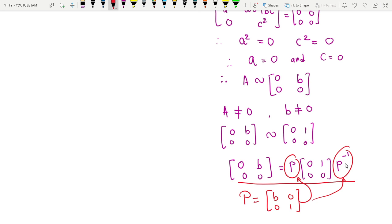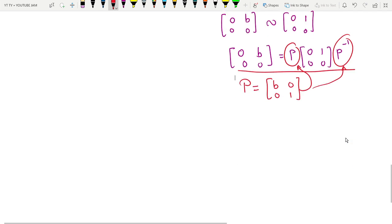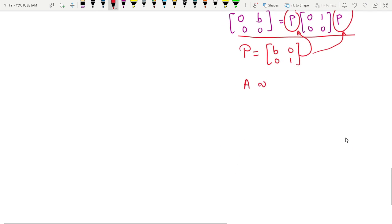Just try to substitute this P and find out the P inverse and substitute it. Just check whether it is true. If it is true, that means [0 b; 0 0] is similar to [0 1; 0 0]. Hence, ultimately, what we get is matrix A becomes similar to [0 1; 0 0]. If you understood the proof, let me know in the comment section if you have any doubt. Thank you.